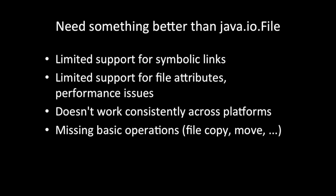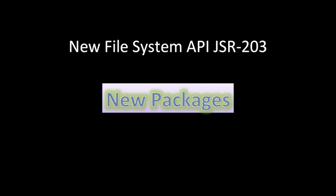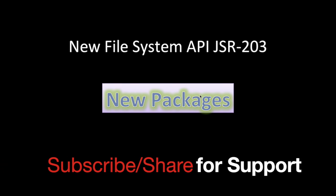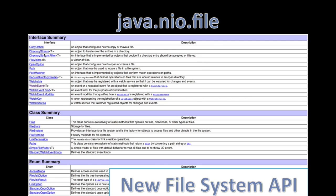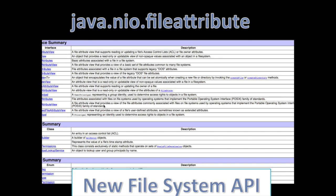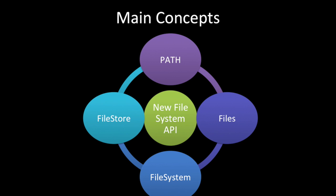The new file system is defined in JSR-203 and introduces new packages. One package is java.nio.file, which has several interfaces, classes, and enums. The next package is java.nio.file.attribute, which has attribute-related interfaces and builder classes. These two new packages are defined in JDK7.